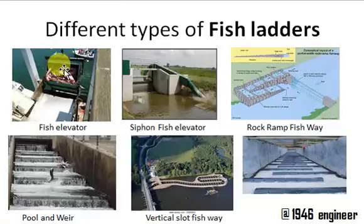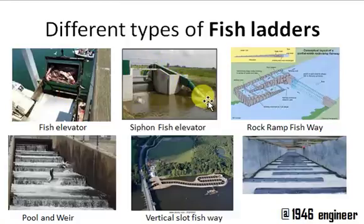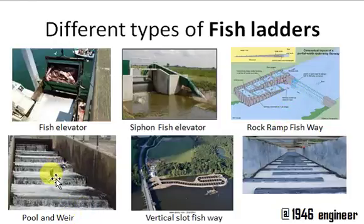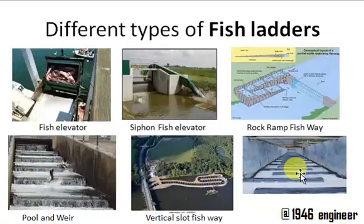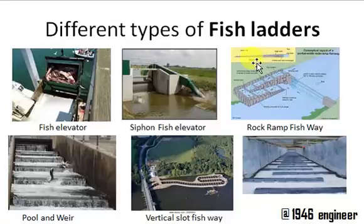There are different types of fish ladders: a fish elevator, in which the fish is lifted from upstream to downstream; a fish siphon, where the fish passes through a siphon; a rock ramp fish way; a pool and weir fish way, where you can see a salmon; a vertical slot fish way; and a zigzag pattern fish way. There are various other types constructed depending upon the location.